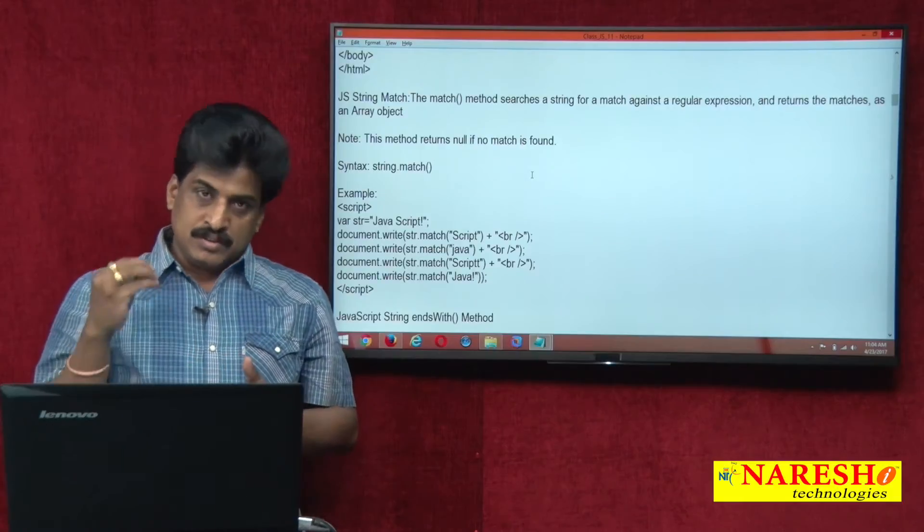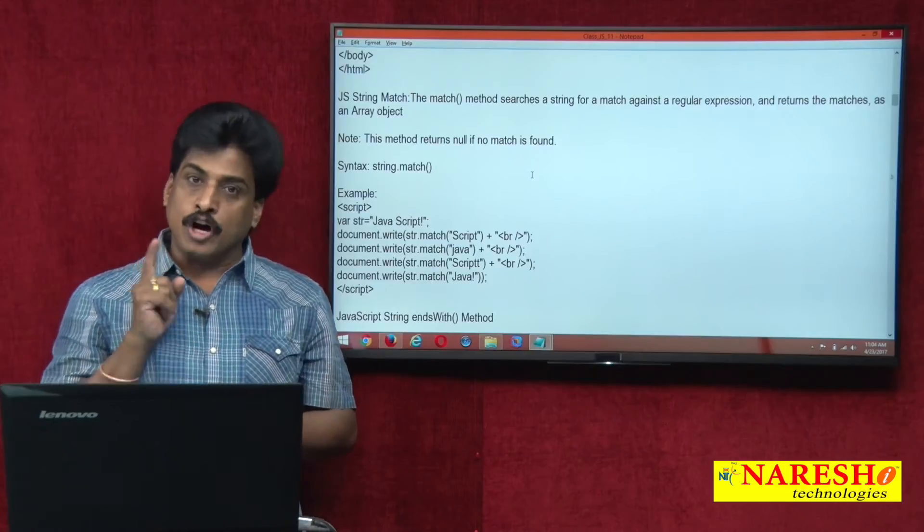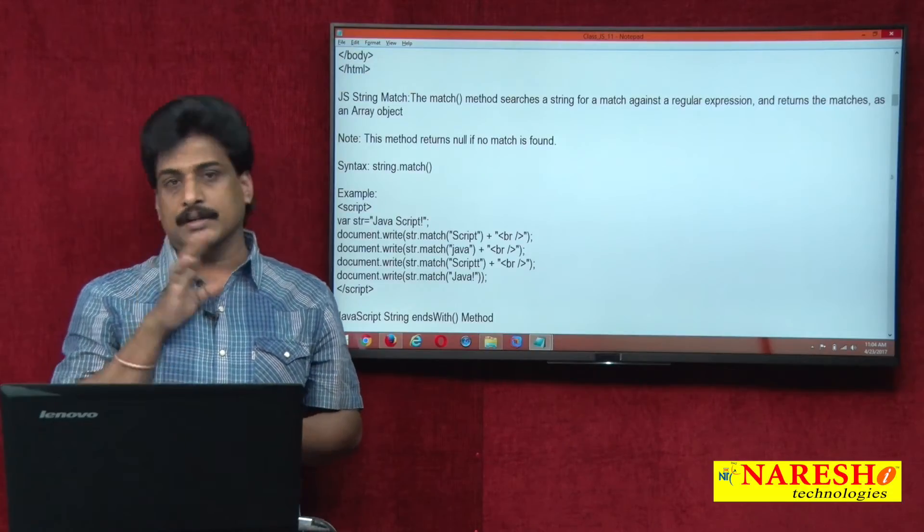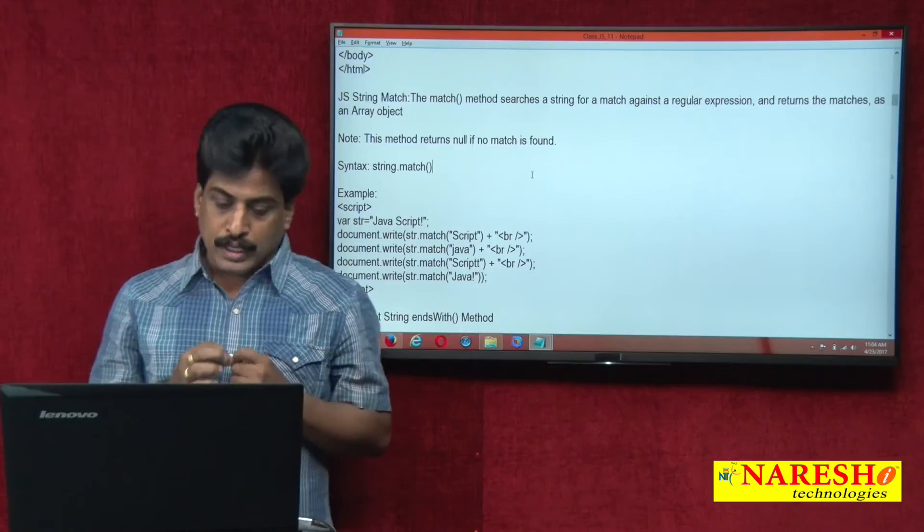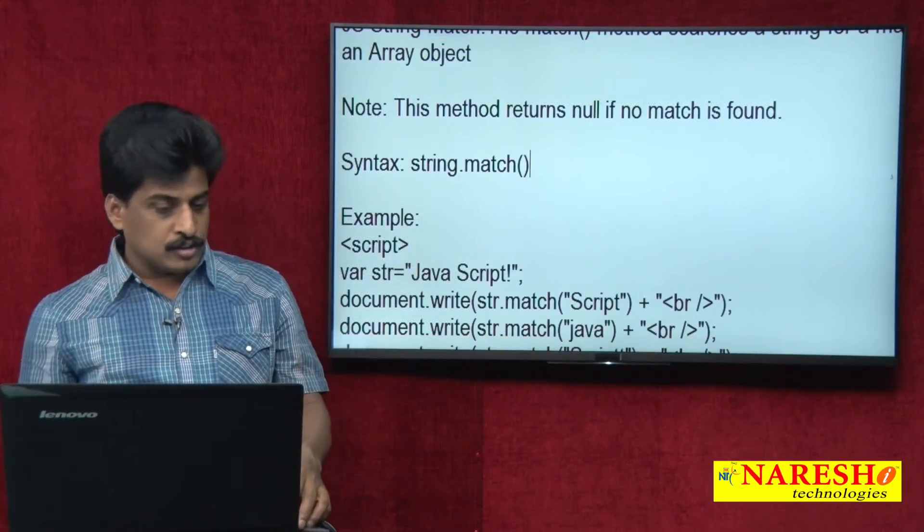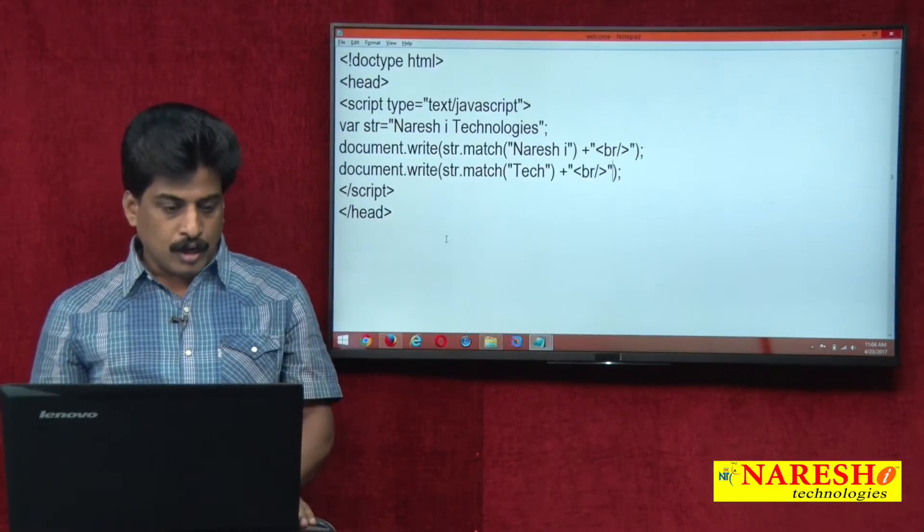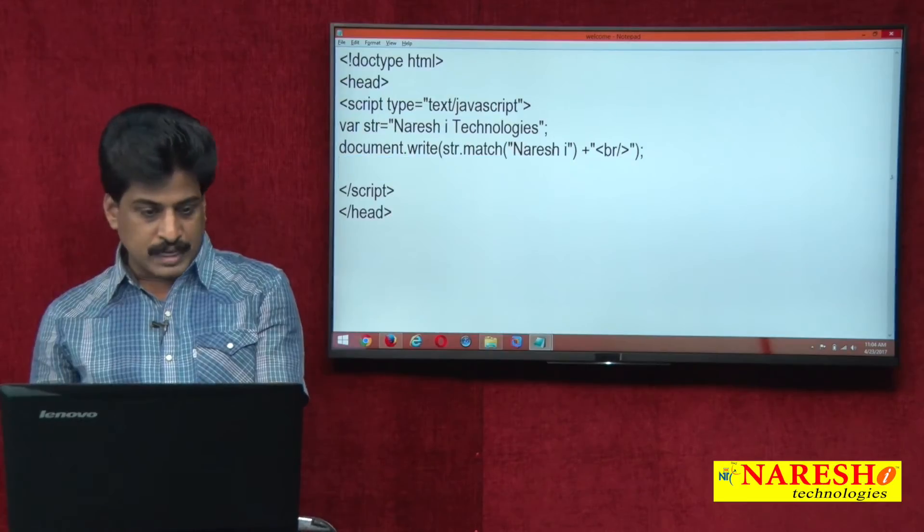In this method, if string matches, the string returns. If string not matches, null value returns. Now we can view that practically. First, syntax we can see: string dot match. Now come back. Already here strings available, only one string I have taken.